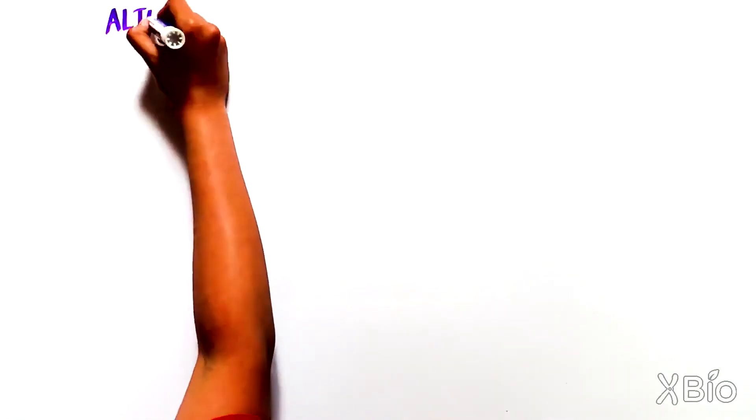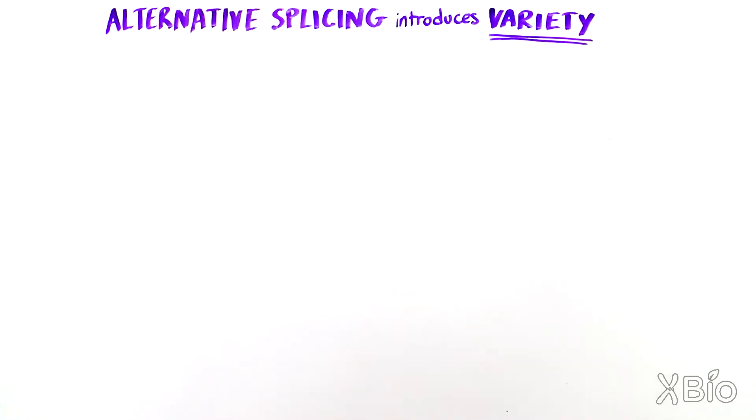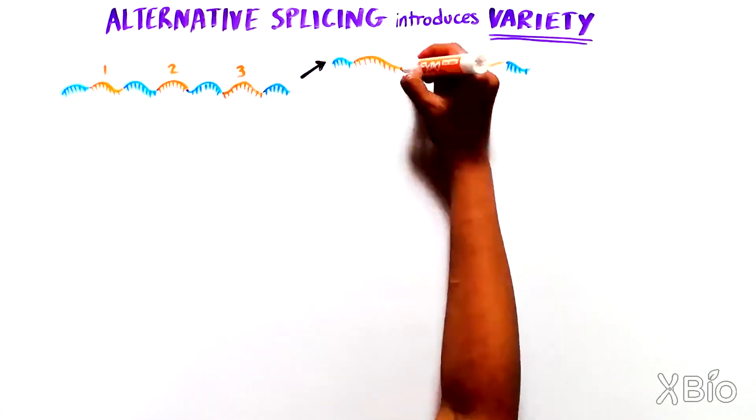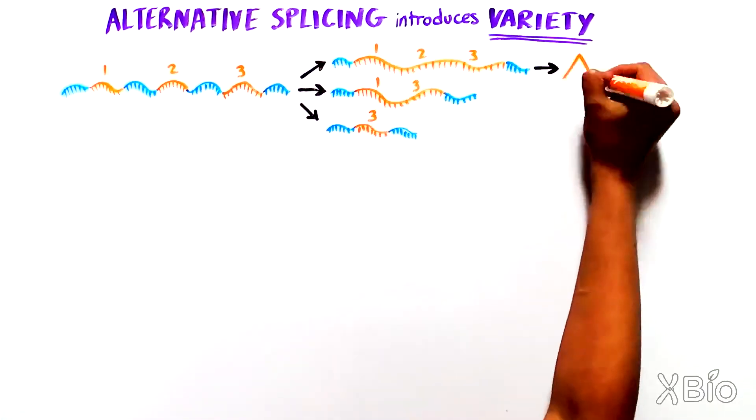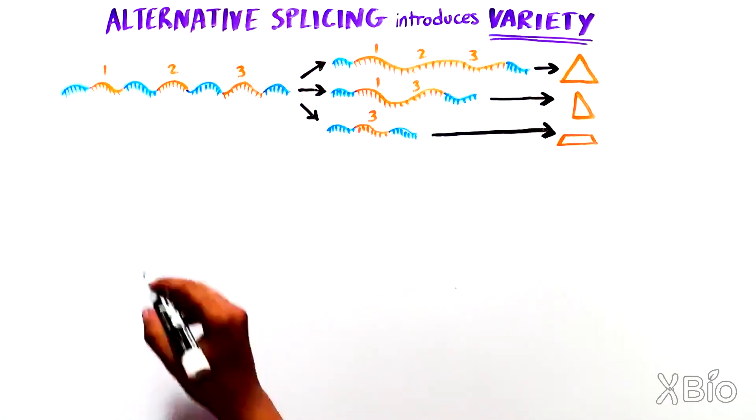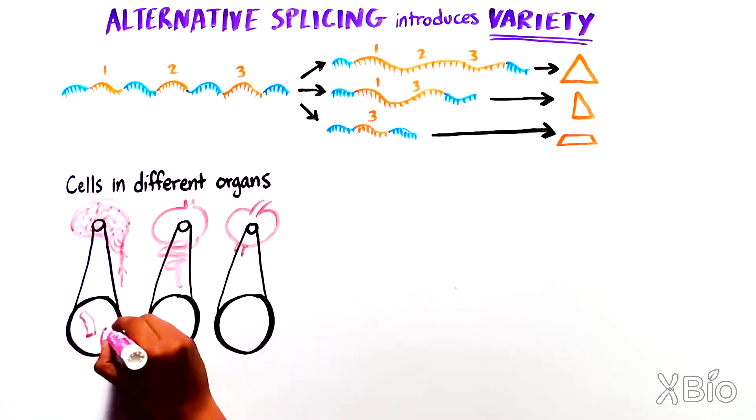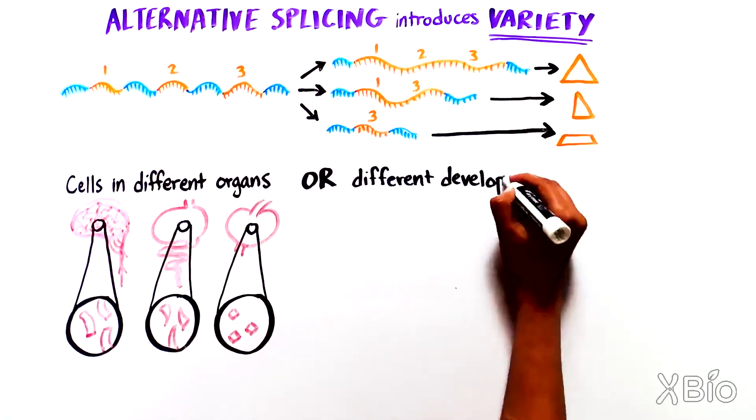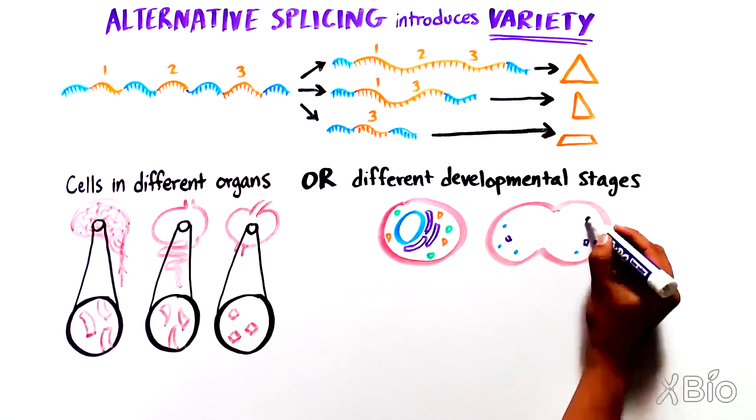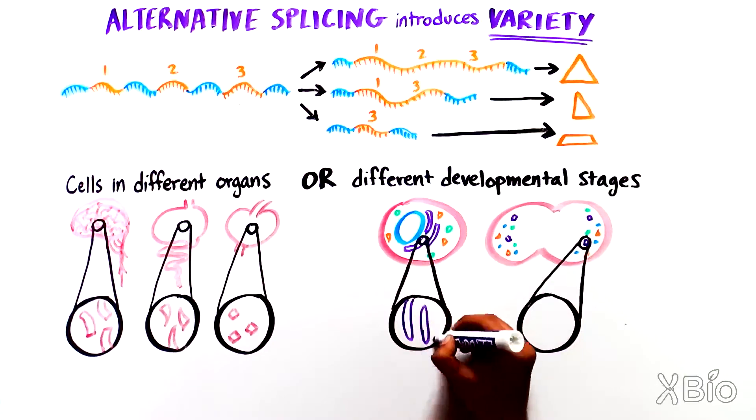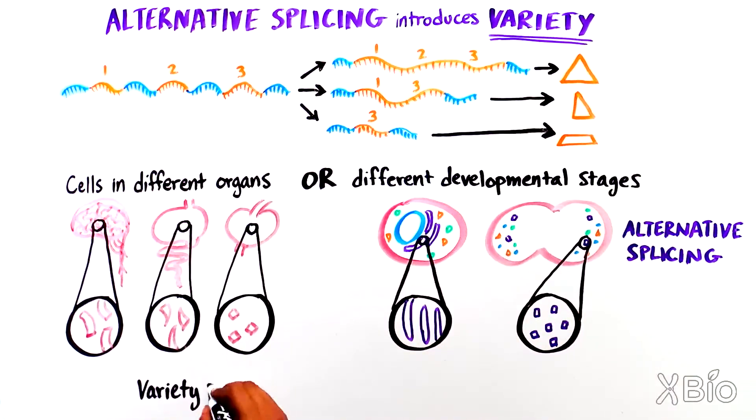A lot of variety can be introduced this way. This allows cells to create many different proteins from just a small number of RNA messages. Cells in different organs, or cells that are at different stages of development, can use alternative splicing to produce proteins suited for their unique functions.